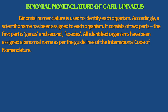Binomial nomenclature is used to identify each organism. A scientific name has been assigned to each organism to maintain uniformity all over the world. It consists of two parts: the first part is the genus and the second part is the species. All identified organisms have been assigned a binomial name as per the guidelines of the International Code of Nomenclature.